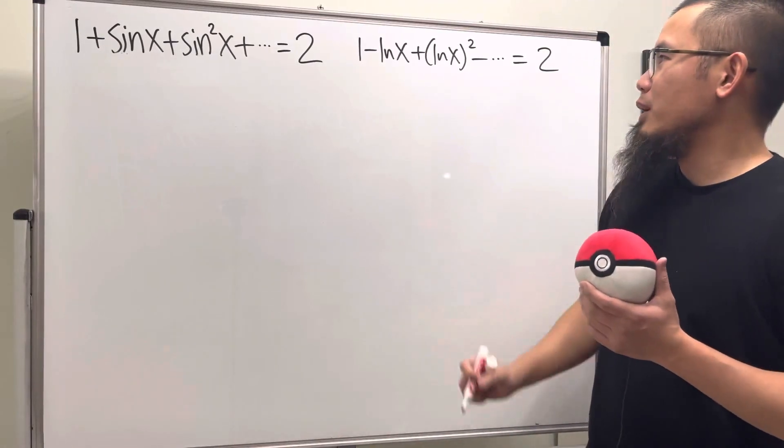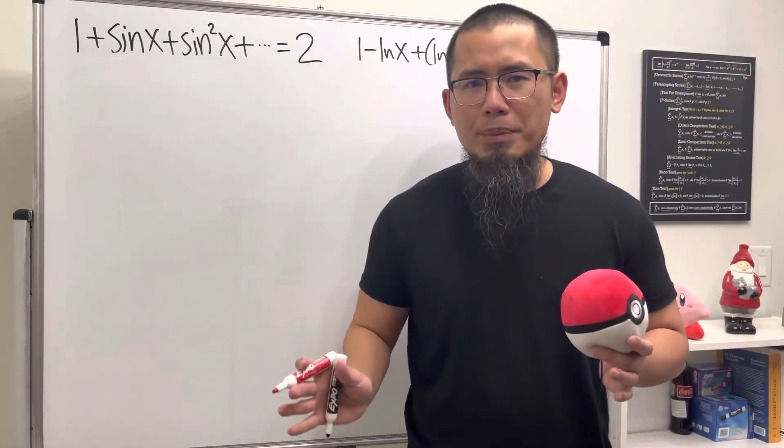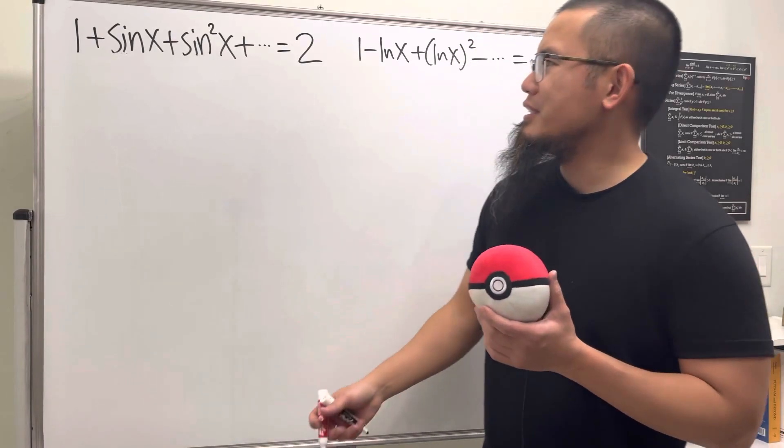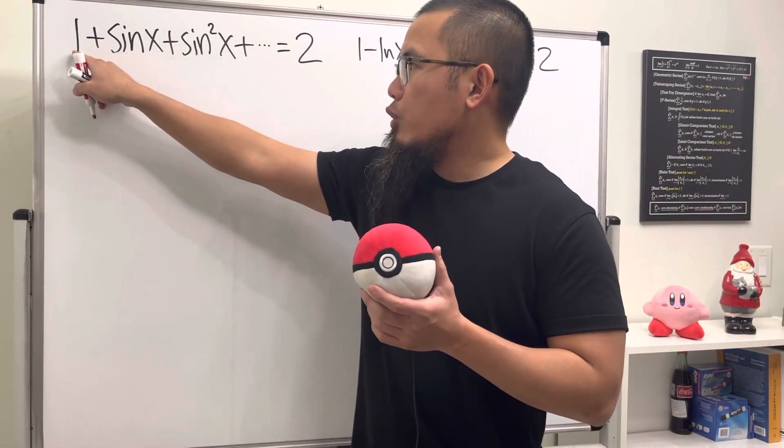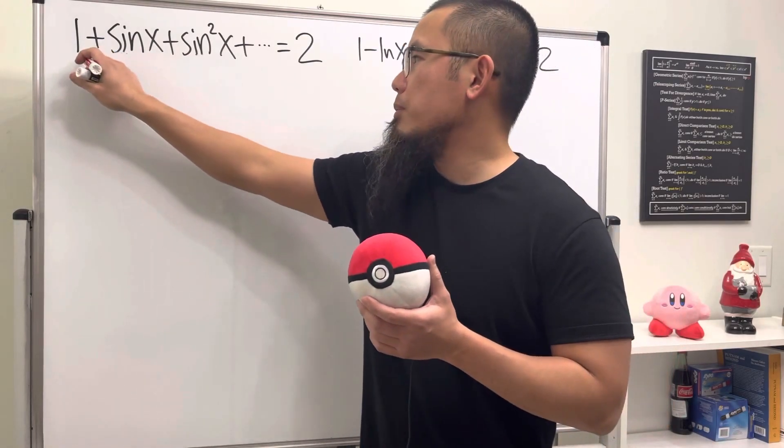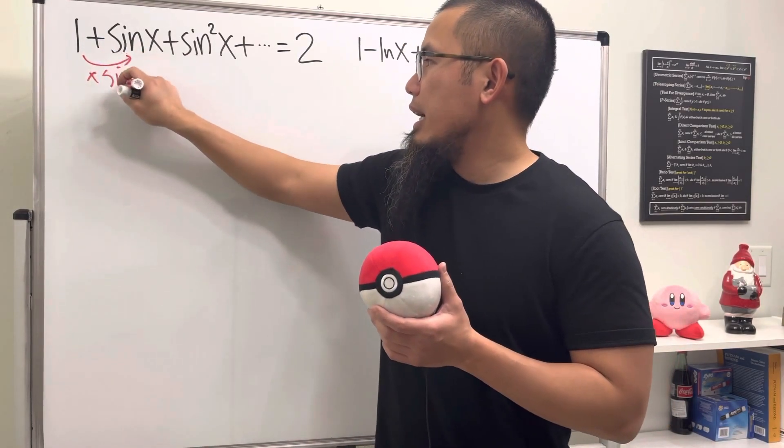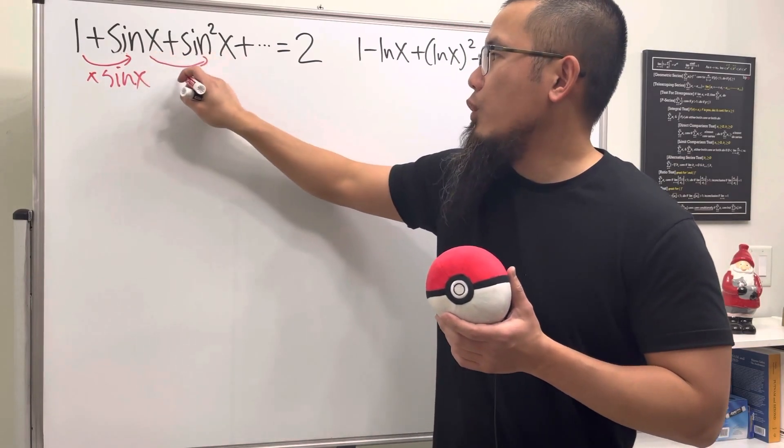We're going to solve these two super long equations, but in fact they're not so bad because they're actually just infinite geometric series. For the first one, you see that when we go from one to sin x, we just have to multiply by sin x, and likewise to go from here to here we multiply by sin x.